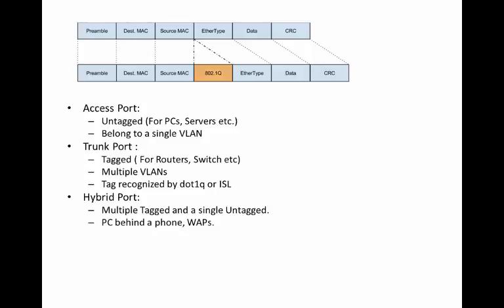An access port is always untagged. The moment someone says it's an access port, you're always talking about something where you receive traffic untagged — or even if you receive it tagged, you associate it with the VLAN that is untagged on that port. An access port on the switch can only belong to a single VLAN. You cannot have multiple VLANs on a port defined as an access port; it will always belong to one single VLAN.